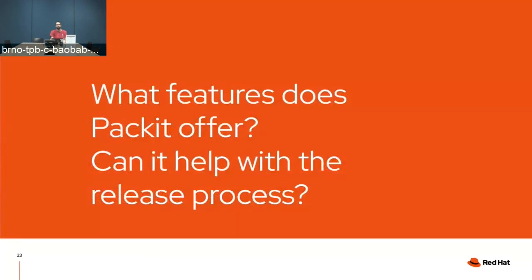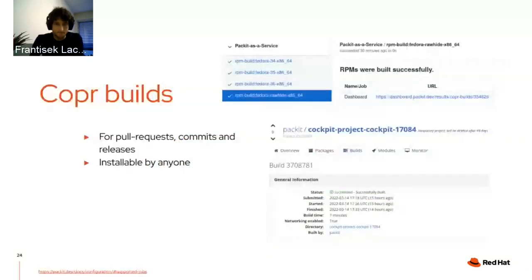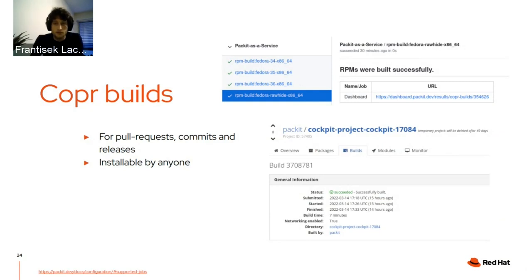Yeah, exactly — as Tomáš mentioned there's a lot going on and Packit can help you with that. Starting from the upstream, Packit can trigger Copr builds for your changes. It can be used as CI to verify buildability, but also to maintain Copr repositories for your users. By adding a few lines to your configuration file you can have a Copr repository including a build for every single commit to a configured branch. We collaborate with the Copr team to make this integration as smooth as possible.